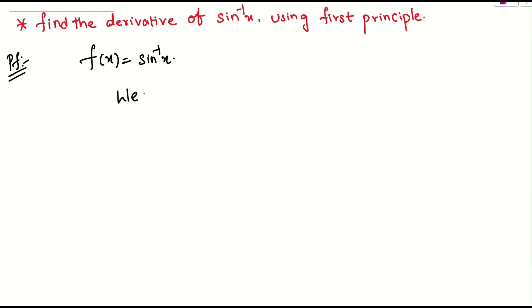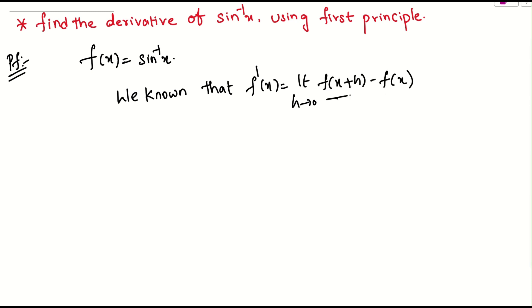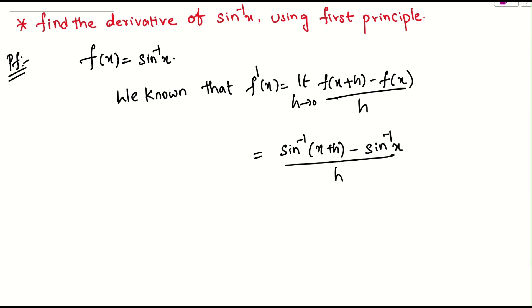We already know the formula for f prime of x. Let me write it down. We know that f prime of x is: limit h tends to 0, f of x plus h minus f of x by h. So what I will do? I substitute each and every value in this. What is f of x plus h? Wherever x is there, we need to replace it. So this is sine inverse of x plus h minus sine inverse of x by h. Limit h tends to 0 should be there.